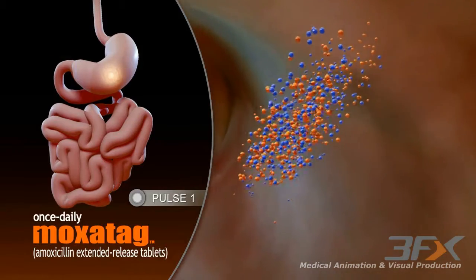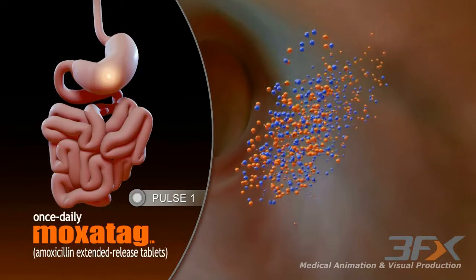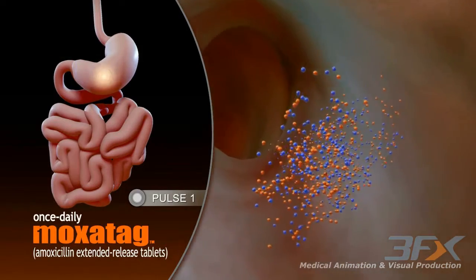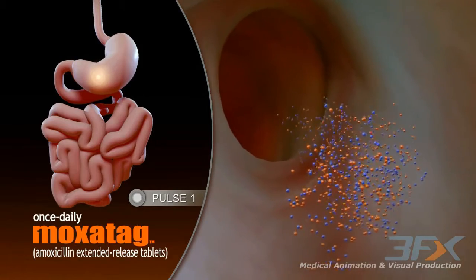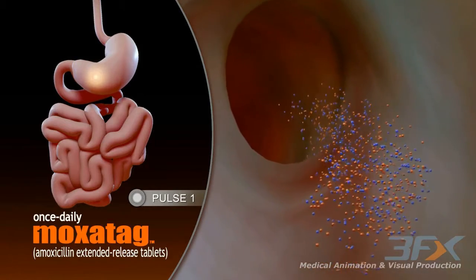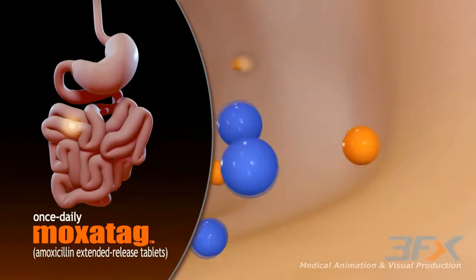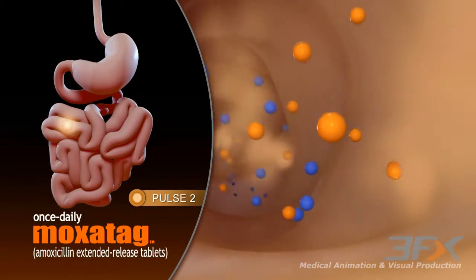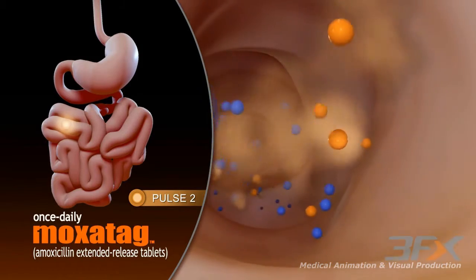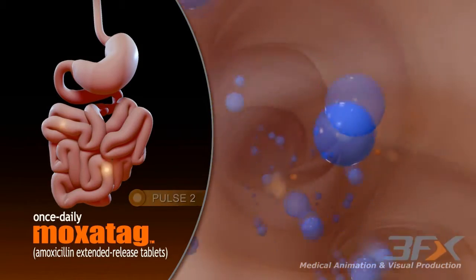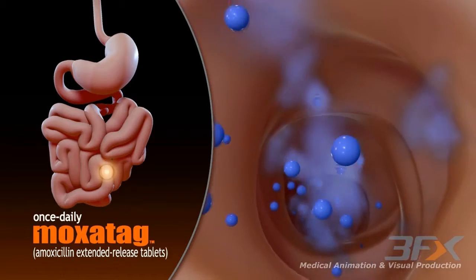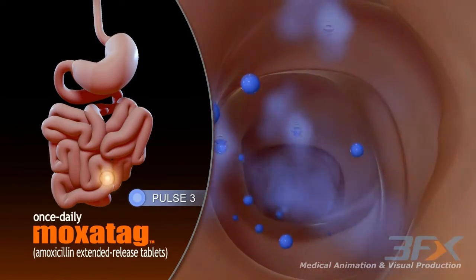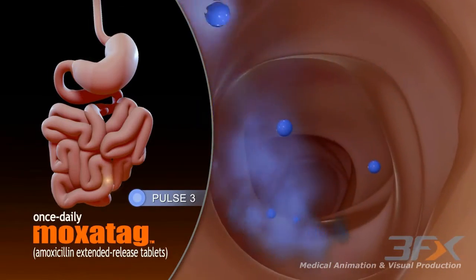Then, as the delayed release components move through the gastrointestinal tract, they release amoxicillin at different regions. The delayed release of Pulse 2 is triggered by a change in the pH in the intestines. This is followed by the delayed release of Pulse 3 as it moves further through the gastrointestinal tract.